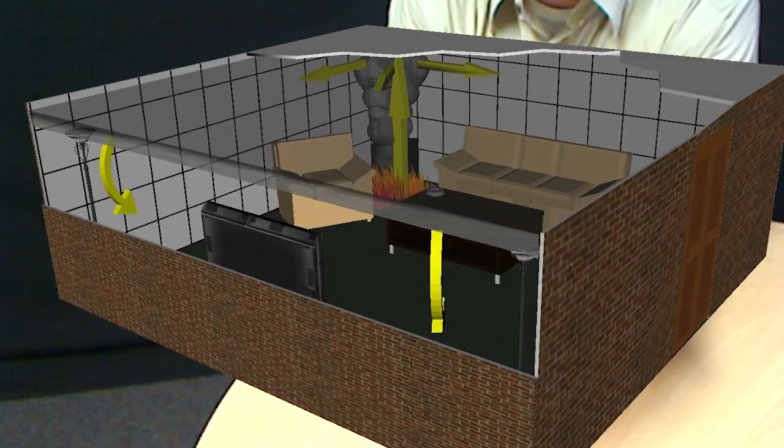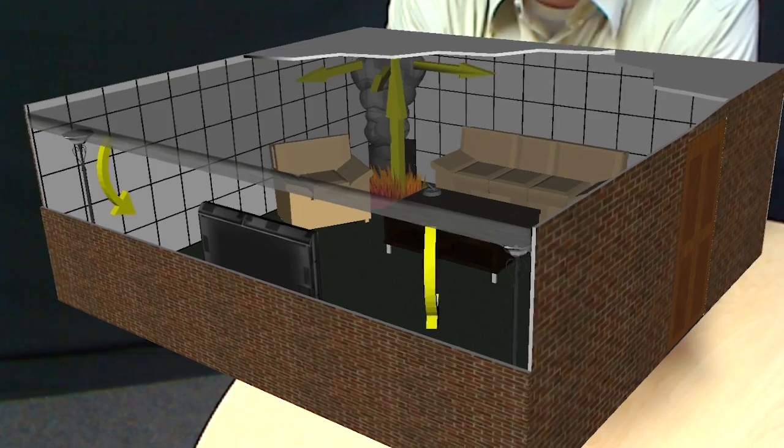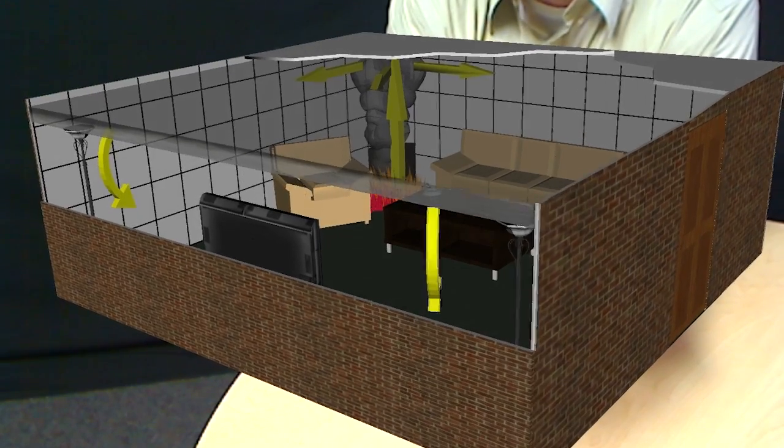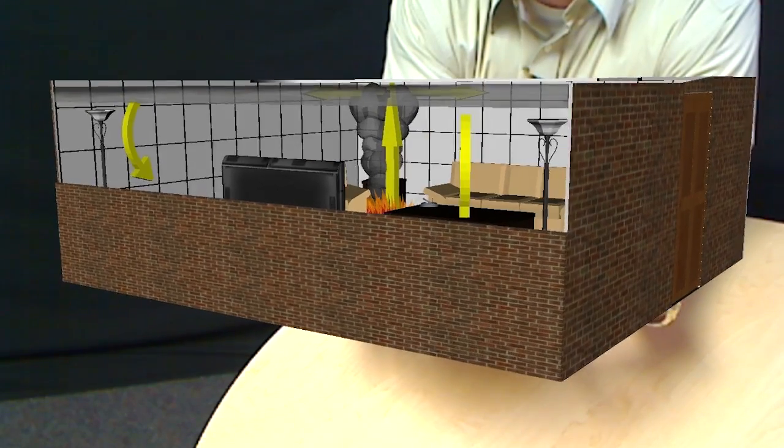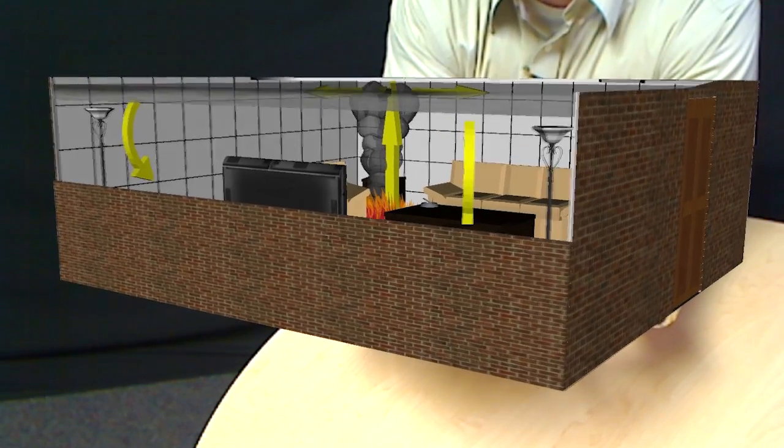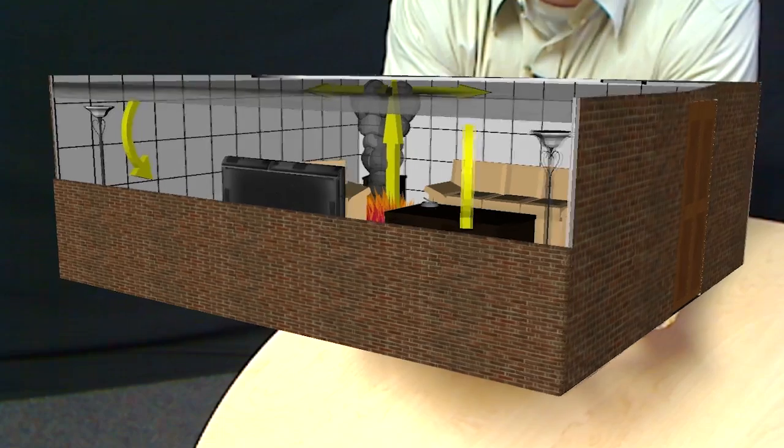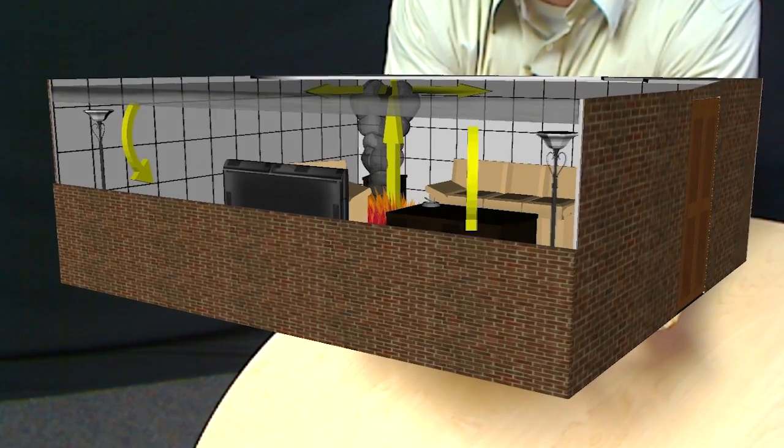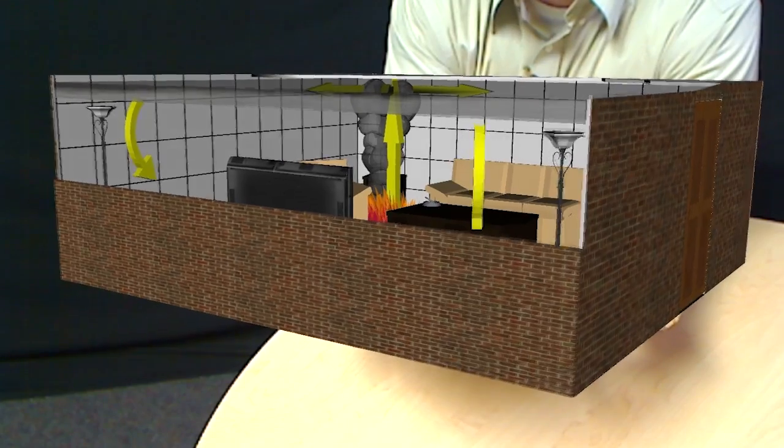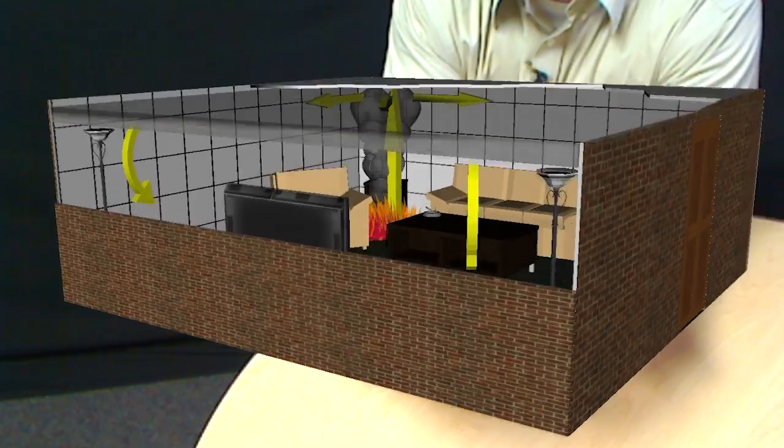And because the smoke will follow the path of least resistance, in this case, the least resistance will be down into the compartment. So we can start seeing this distinct difference between the heated gases in the upper layer—what's termed the upper layer—that collection of smoke and heated gases near the ceiling, start to develop and descend from the ceiling.